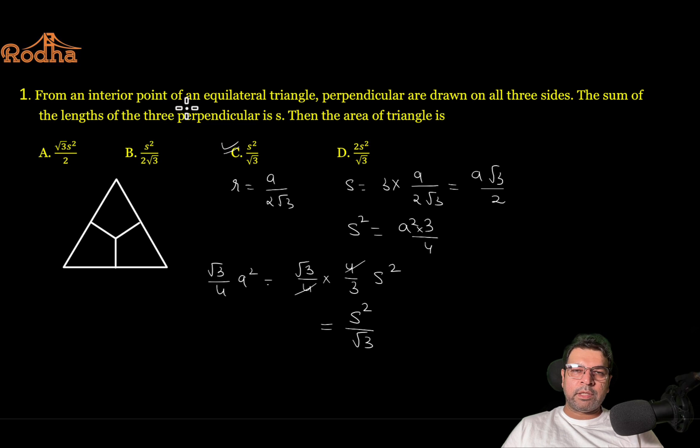So the smart trick is that assume the point at the intersection point of medians which is centroid, or in an equilateral triangle, all the four centers are same. Whether you call it centroid, incenter, circumcenter, orthocenter. That is what we are talking about.